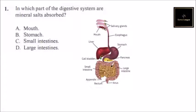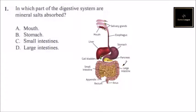From the stomach, food gets to the small intestines. There it is further mixed with digestive juices from the pancreas and from the gallbladder. Minerals and nutrients are then absorbed into the body.